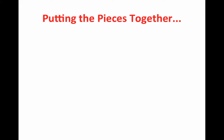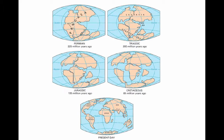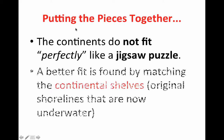Putting the pieces together: Wegener had several reasons or proofs why he believed all the continents would fit together. If you look at the continents, they look kind of like they'd fit into a jigsaw puzzle, though they don't fit perfectly. The better fit is found by matching the continental shelves, or the original shorelines, which are now underwater.